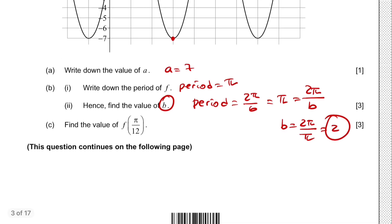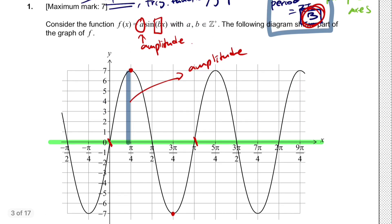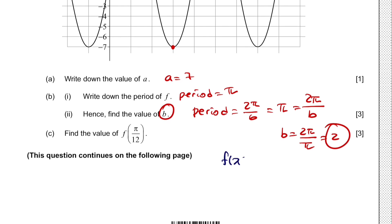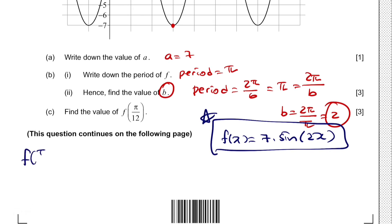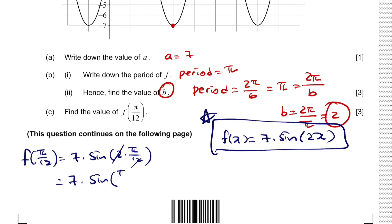For question (c), we need to find f(π/12). Rewriting our function with the values we found: f(x) = 7·sin(2x). Substituting π/12: f(π/12) = 7·sin(2 × π/12). Simplifying, 2 and 12 reduce, giving 7·sin(π/6).